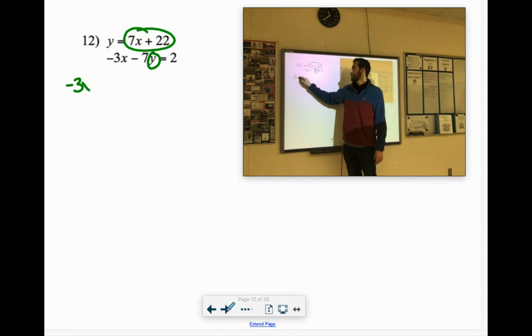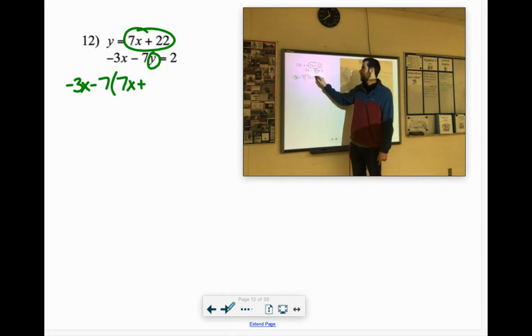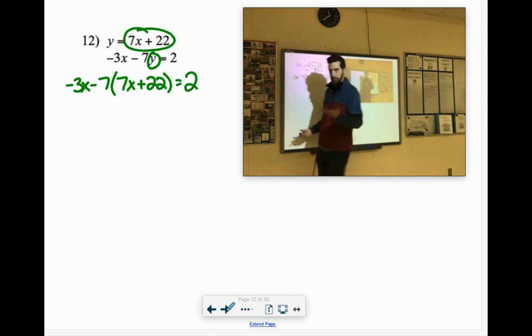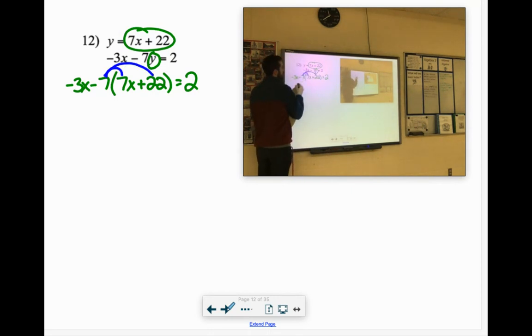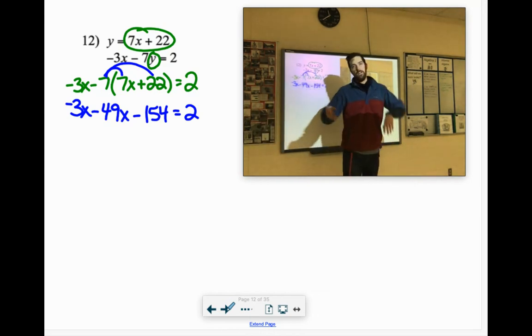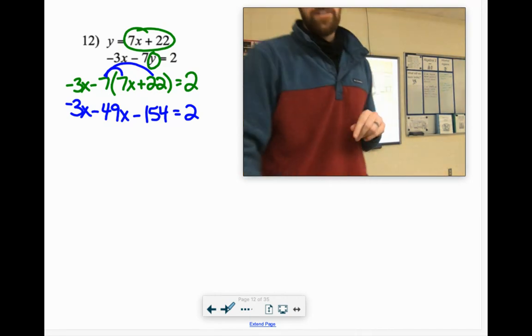It's negative 3x minus 7y. y is 7x plus 22 equals 2. Distribute. Negative 3x minus 7 times 7 is 49. 7 times 22 is 140. Maybe 154. And we will continue this on the next video. These are fun.